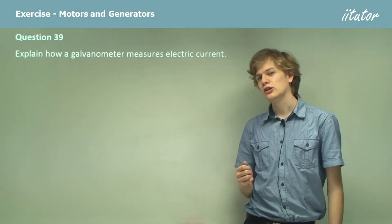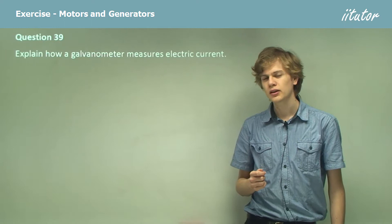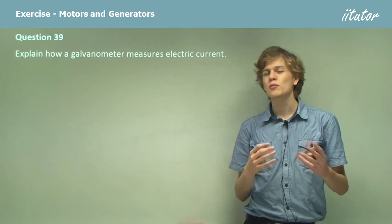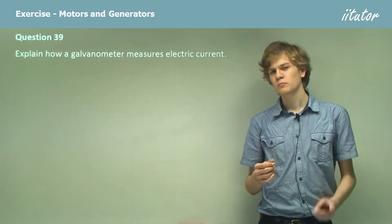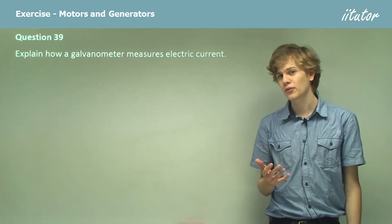Explain how a galvanometer measures electric current. So a galvanometer is a type of ammeter. When we put a current through it, it gives us a reading of how much current there is.